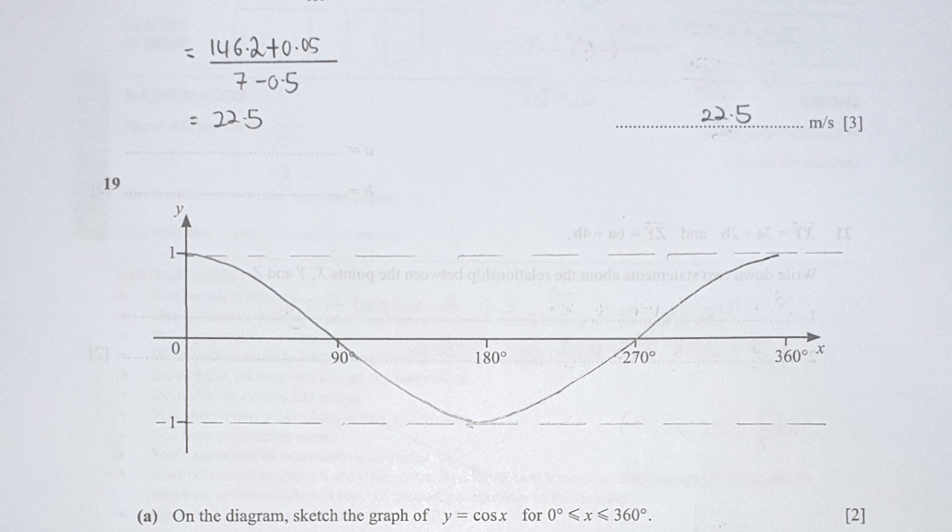Question 19 is a newly added topic: sketch the basic cosine graph. Nothing much—you can memorize this. This is roughly how it should look. The lowest point is at 180, touching negative 1. The highest points are at 0 and 360 degrees.